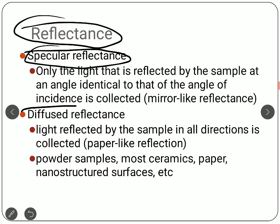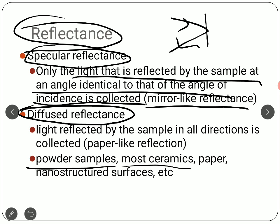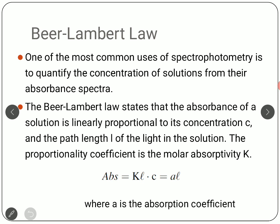Reflectance has two types: specular reflectance and diffuse reflectance. Specular reflectance behaves like a mirror, following the laws of reflection — light incident at an angle is collected at the corresponding reflection angle. Diffuse reflectance, on the other hand, occurs with practical samples like powders, ceramics, paper, or nanostructured surfaces, which scatter light in all directions. This is also known as diffuse or Lambertian reflection, and is the more common case in practice.